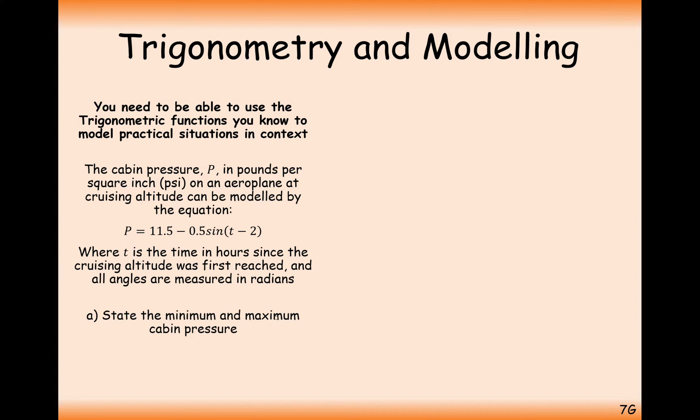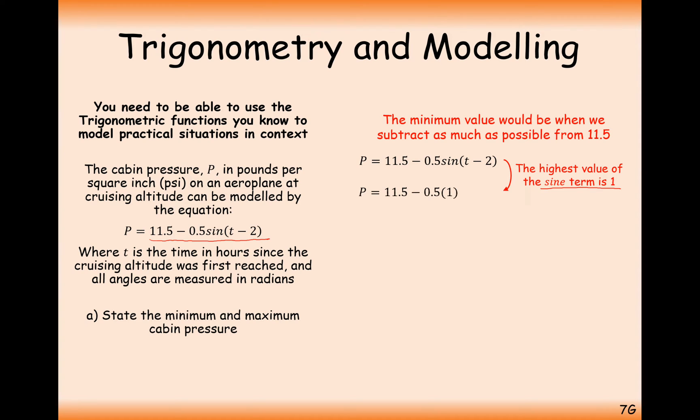First we're going to state the minimum and maximum cabin pressure. For the minimum, we want to subtract as much as possible from 11.5. We want sine of T minus 2 to equal 1, the highest value of sine, so we maximize that sine function. Replace sine T minus 2 with 1, expand the brackets and calculate, and you get P is 11 psi.